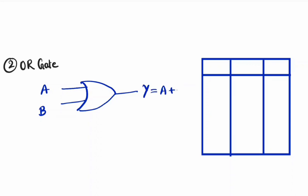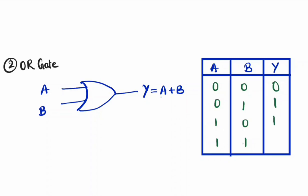OR is basically considered as addition of A and B. For the truth table with inputs A and B and output Y: if both inputs are 0, the output is 0 (0 + 0 = 0). If A=0 and B=1, output is 1. If A=1 and B=0, output is 1. And 1 + 1 = 1, not 2, because there are only two states — 0 or 1.